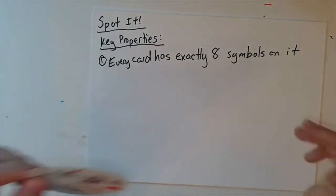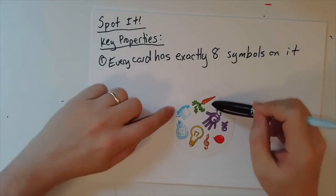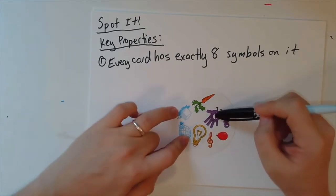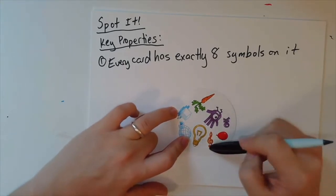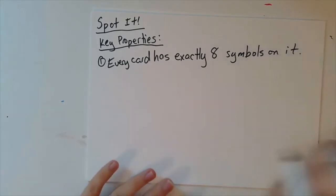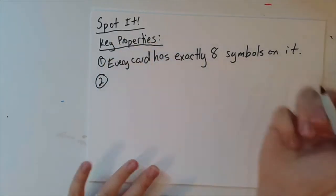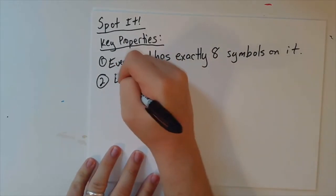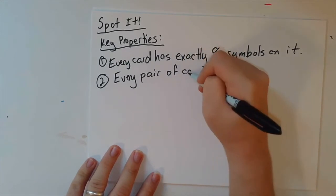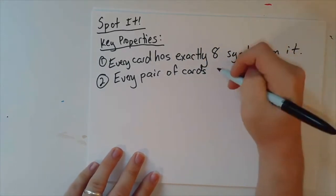So for example, this one has the carrot, the ice cube, the igloo, the light bulb, the hand, the OK symbol, the balloon, and the cleft note. And two is, every pair of cards share exactly one symbol.